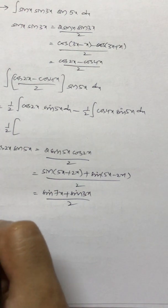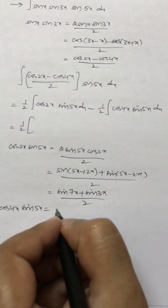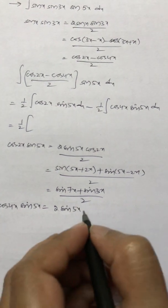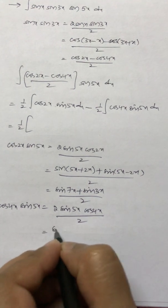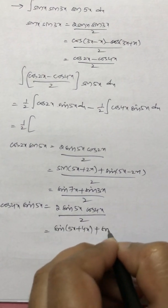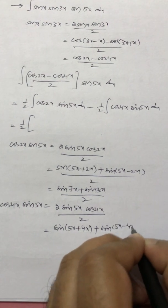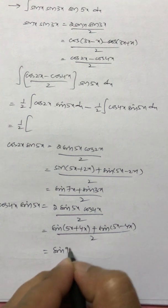Again for the other part, cos 4x sin 5x. Multiply and divide by 2, so 2 cos 4x sin 5x by 2. This is sin(5x + 4x) plus sin(5x - 4x) by 2, which is sin 9x plus sin x by 2.